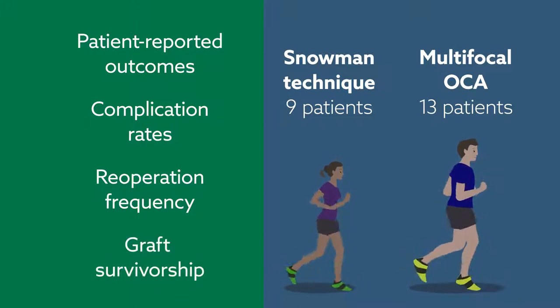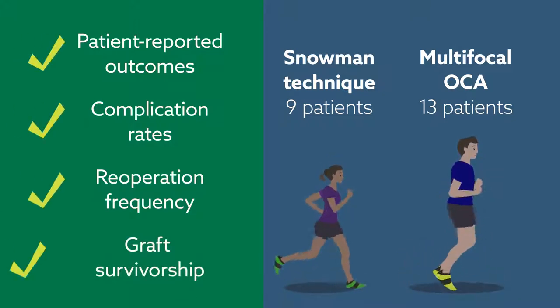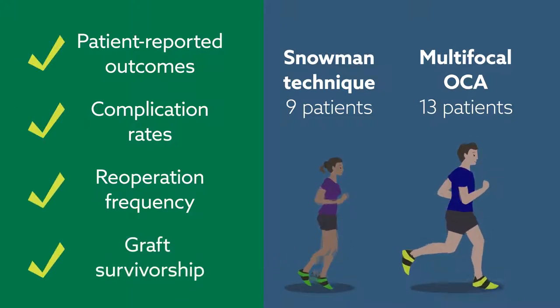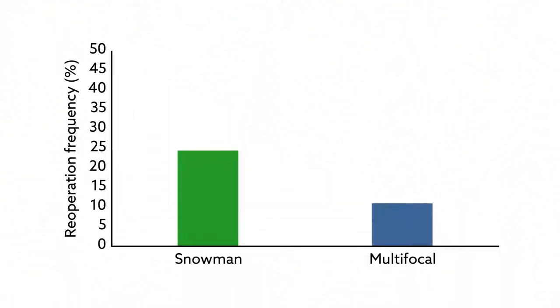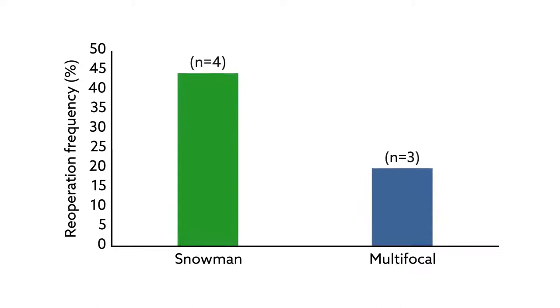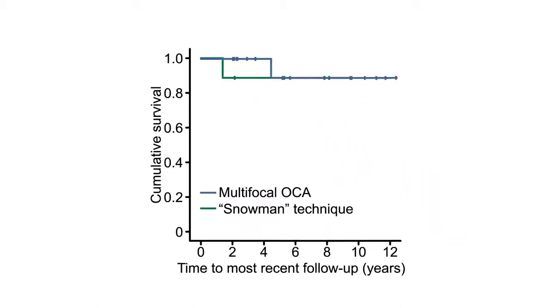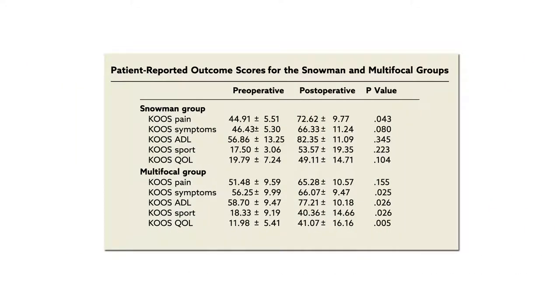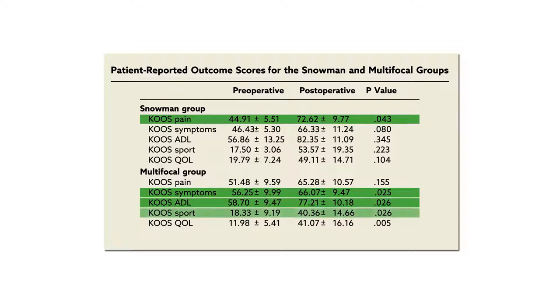The results suggest that multifocal OCA produces superior results across the board. Patients who underwent SNOWMAN OCA were more than twice as likely to require reoperation and nearly five times as likely to experience graft failure compared to those who underwent multifocal OCA. The multifocal procedure also led to more pronounced improvements in the majority of patient-reported outcome measures.